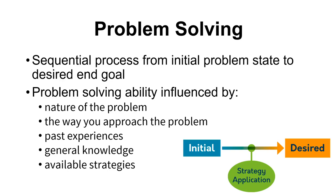For the last part of this chapter, we're going to talk about how we might solve problems and make decisions. When we talk about problem solving, we're talking about a sequential process where we go from some initial problem state to a desired end goal. In order to achieve that desired solution, we need to choose and select our appropriate strategies and apply those to that situation.